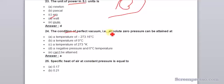The condition of a perfect vacuum, absolute zero pressure, can be attained at a temperature of minus 273.16 degrees Celsius.